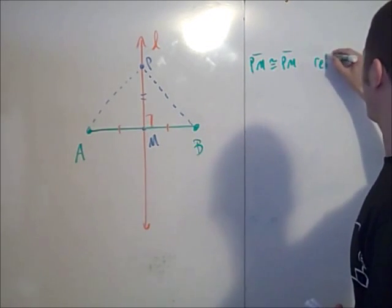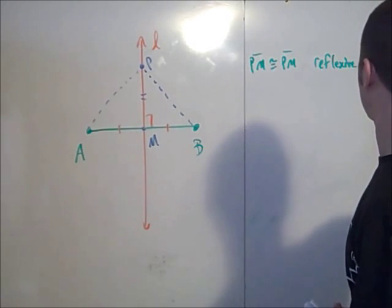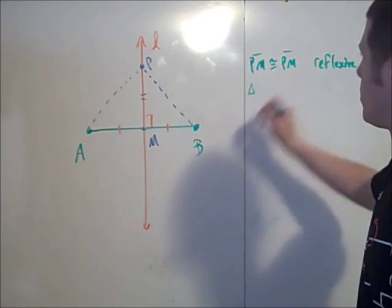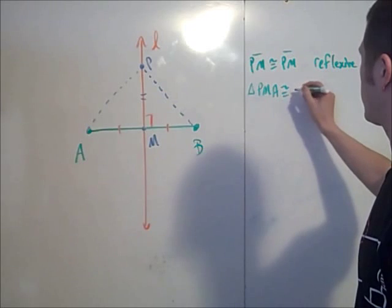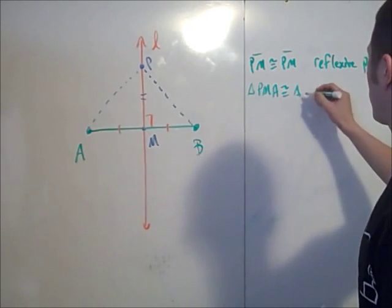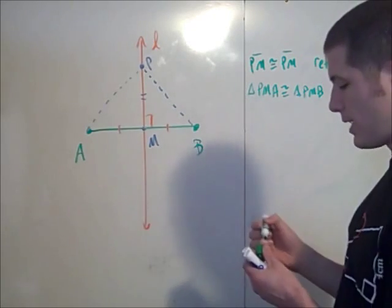This is by the reflexive property of congruence. And then we have triangle PMA is congruent to triangle PMB, and that's by side-angle-side.